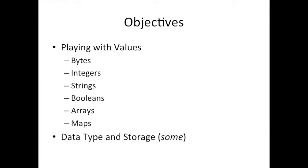In Go, you can type values for a number of different data types. I'm showing you some here — you can type in bytes, integers, strings, booleans, arrays, and maps. In this chapter we're going to cover some of that and a little bit about data types in general, and talk a little bit about how things are stored.